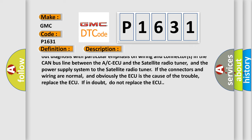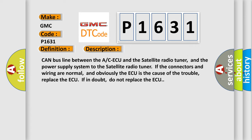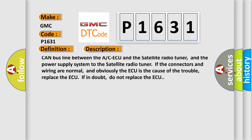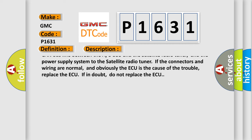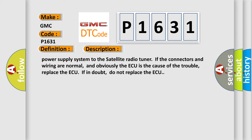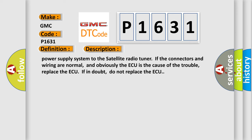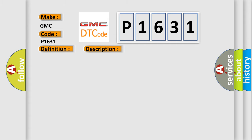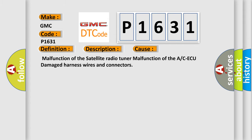If DTC U0195 is stored as a past trouble, carry out diagnosis with particular emphasis on wiring and connectors in the CAN bus line between the ACAQ and the satellite radio tuner, and the power supply system to the satellite radio tuner. If the connectors and wiring are normal and the ACAQ is the cause of the trouble, replace the ACAQ. If in doubt, do not replace the ACAQ. This diagnostic error occurs most often due to: malfunction of the satellite radio tuner, malfunction of the ACAQ, or damaged harness wires and connectors.